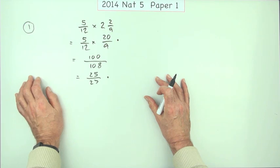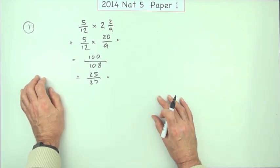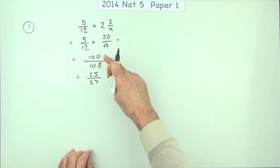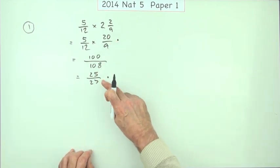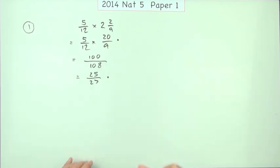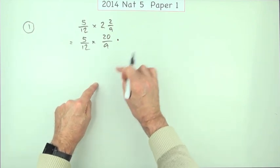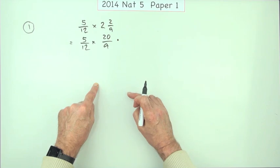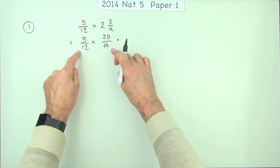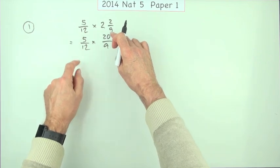However, there was another way you could have got from here to here without this intermediate step. That would have been instead of multiplying first and then canceling it down, why not cancel it out first when the divisions are much more obvious, when the numbers are smaller.